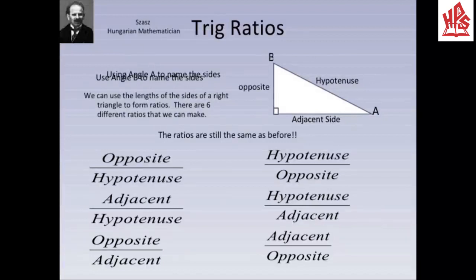Now we come to the topic of trigonometric ratios. As we all know, a ratio is the comparison of two quantities of the same kind. Consider triangle ABC. We can use the lengths of the sides of a right triangle to form ratios. There are six different ratios that we can make: opposite over hypotenuse and hypotenuse over opposite, adjacent over hypotenuse and hypotenuse over adjacent, opposite over adjacent and adjacent over opposite.